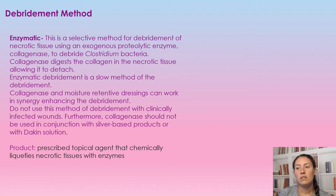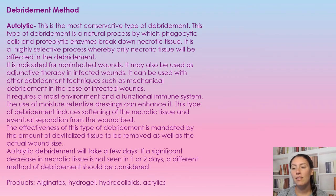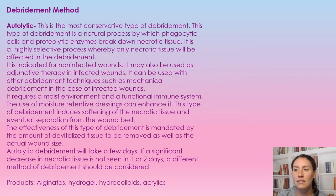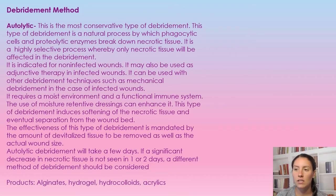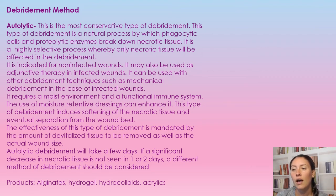Our next debridement method is autolytic debridement, which is the most conservative type. It is a natural body process where phagocytic cells and enzymes break down necrotic tissue. It is indicated for non-infected wounds but can be used in conjunction with antibiotic therapy for infected wounds. It requires a moist environment and a functional immune system, so it may not be the best choice for immunocompromised patients. It uses moisture-retention dressings to enhance the process.